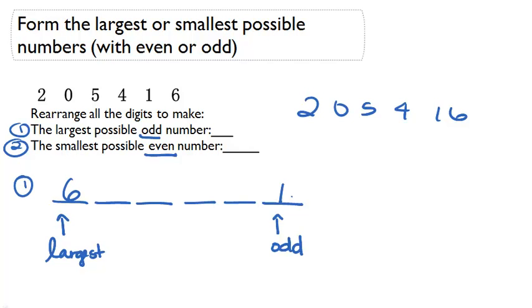So go from largest to smallest. We have six, then five, then four, then two. One is actually greater than zero, but because one is already in the ones place to make it an odd number, we can put our zero here.